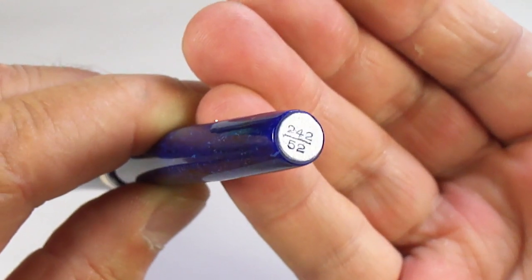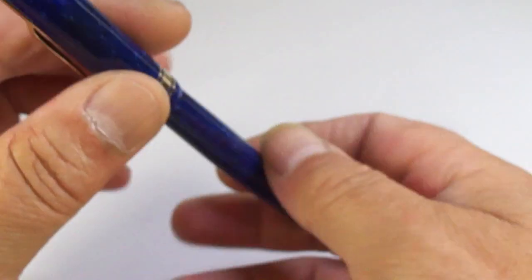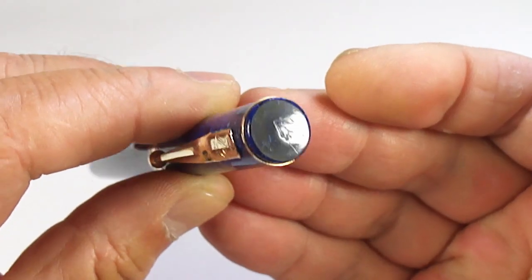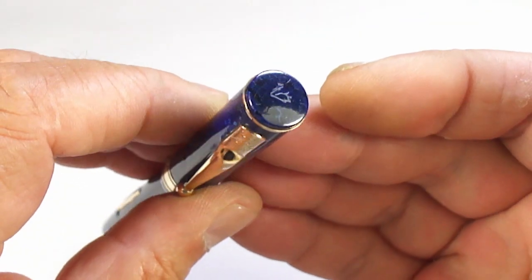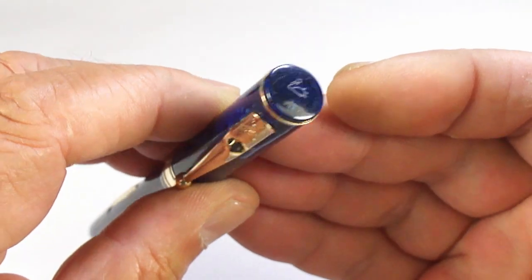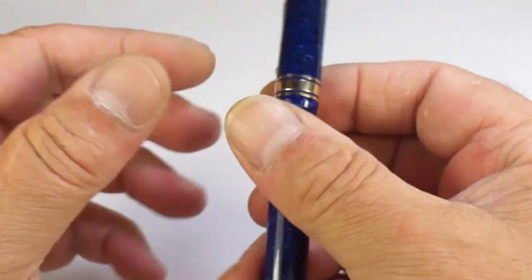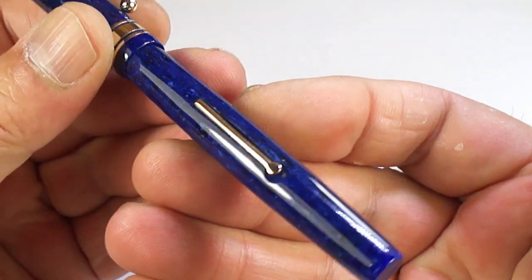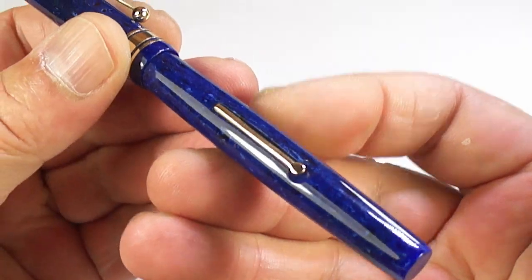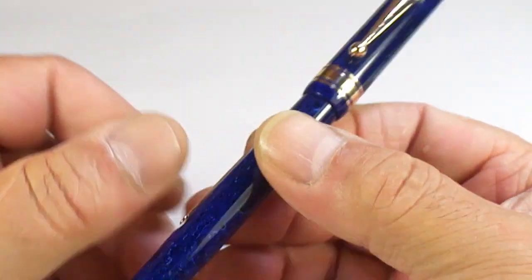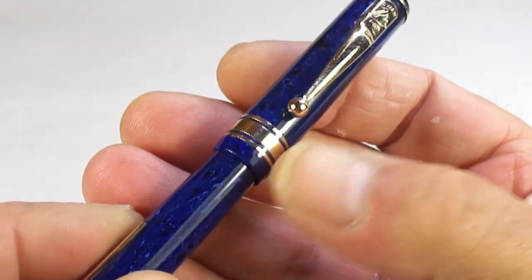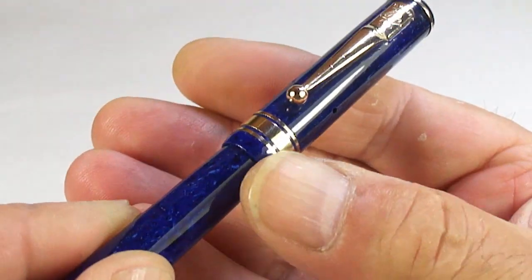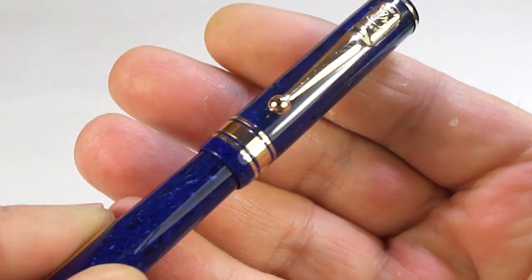L242-5052, and then to the very top of the cap you've got the sort of customary Swan logo. You'll notice it's got gold-filled trim. It's a lever-filled pen, as we've just mentioned, quite a long lever. It's got the cap bands to the cap there. You can see it's got this quite a broad one with two thinner ones to each side.